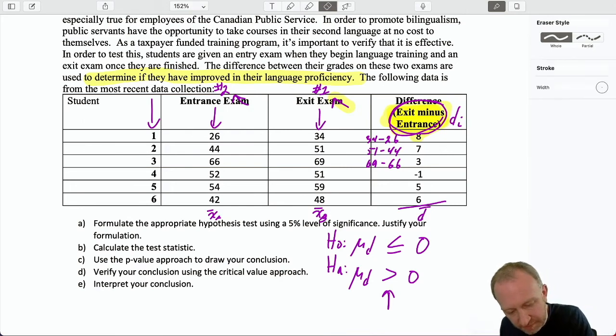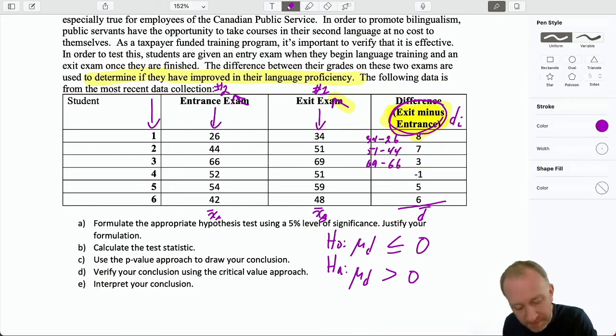To justify my test, I have formulated it this way so that if the evidence supports the alternative hypothesis, I have evidence to show that there has been on average an improvement in students' language proficiency. If the evidence supports the null hypothesis, I am unable to show that this taxpayer funded program has led to an improvement in students' language proficiency. So there's my justification. To be thorough, we're doing this at the alpha 0.05 level of significance.